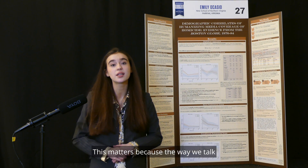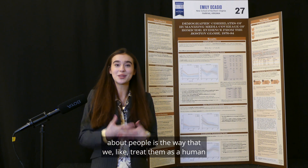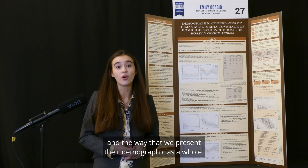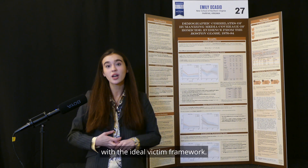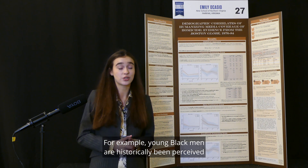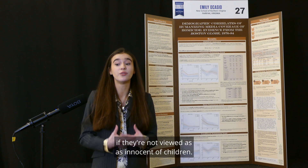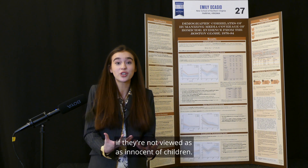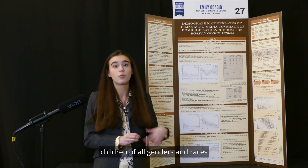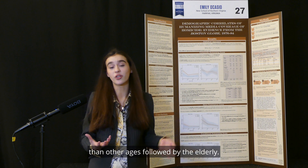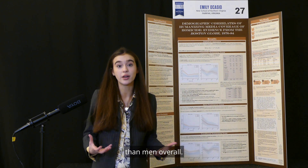This matters because the way we talk about people is the way that we treat them as human and the way that we present their demographic as a whole. Additionally, my results do align with the ideal victim framework. For example, young black men have historically been perceived as much older or less innocent than their white male counterparts — they're not viewed as innocent children. Following the ideal victim framework, children of all genders and races receive more humanizing coverage than other ages, followed by the elderly.